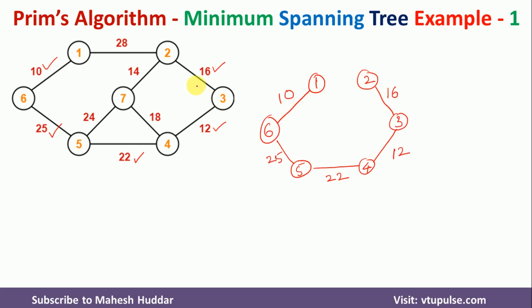Finally, we consider the neighbors of all visited nodes. The smallest remaining weight is 14, between nodes 2 and 7. So we draw an edge between node 2 and node 7 with weight 14.